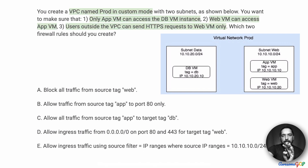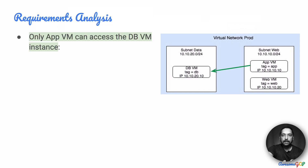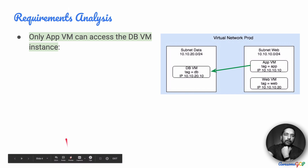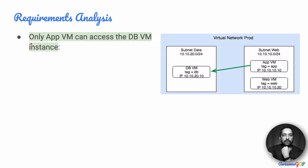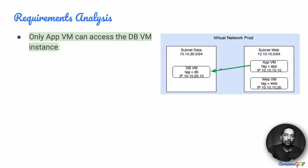The requirements are very clear — there are three bullet points that we need to meet, and we are also given the information that this VPC was created in custom mode. The first requirement says that only AppVM can access the dbVM instance, so AppVM should be able to access dbVM and only AppVM. Traffic should flow only between these two, and if you allow a firewall rule in one way, it automatically allows it in the reverse way also.